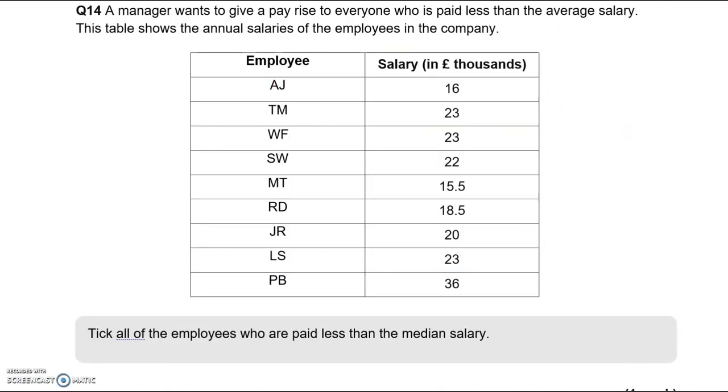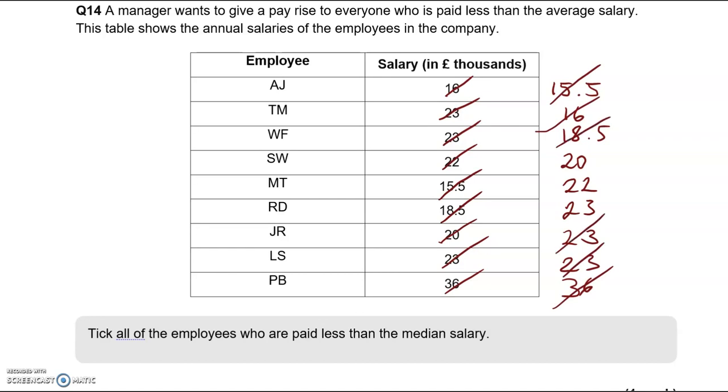Question 14: A manager wants to give a pay rise to everyone who is paid less than the median salary. This table shows the annual salaries in thousands of pounds. We need to work out the median salary. I'm going to order them from lowest to highest. So 15.5 is lowest, then 16, then 18.5, then 20, 22, 23, another 23, another 23, and finally 36. I'm going to cross them out on both sides to see what is in the middle. We've got 22.